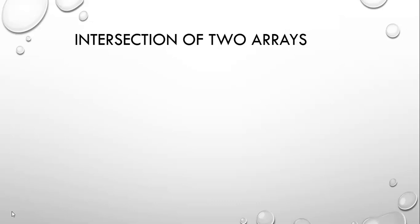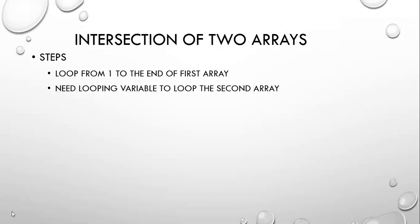In order to do that, we're going to go through the following steps to find the intersection of two arrays. First, we're going to have a for loop that goes from one to the end of our first array, going through every single element of that first array. We're going to check each element of the first array with an element in the second array, so we need a looping variable for the second array. Because we're not always going to go from one to the end, we're going to use a while loop — a conditional loop — which means we need to initialize our own looping variable to one.